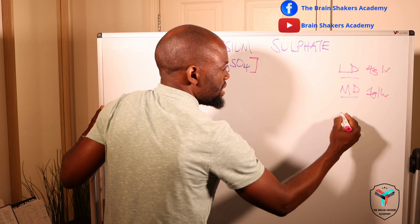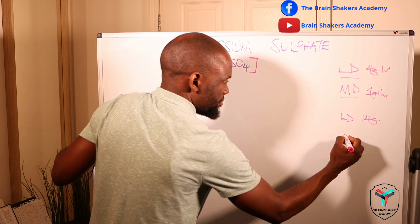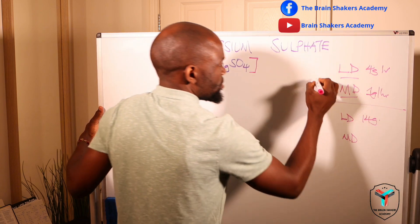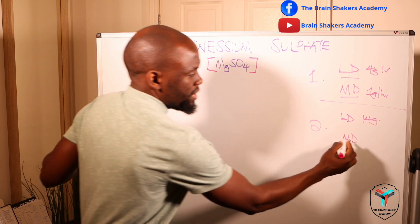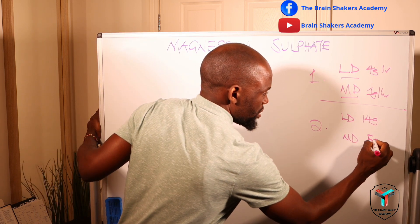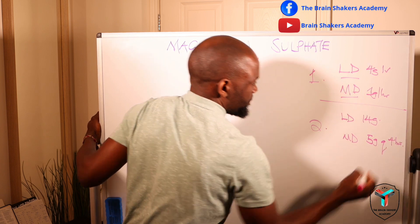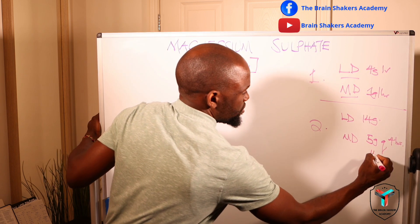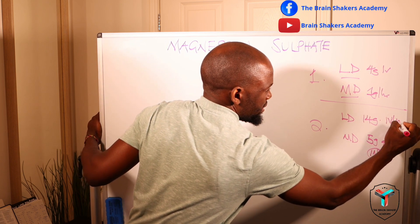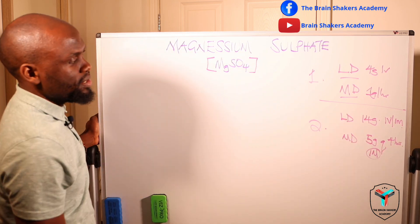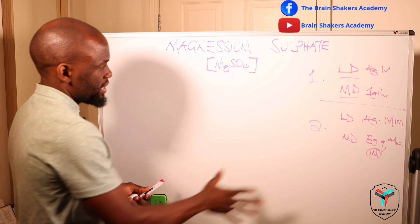In the second method, the loading dose is 14 grams of magnesium sulfate, and the maintenance dose is 5 grams every 4 hours. The loading dose in this method is administered both IV and IM, and we'll look at both methods so the administration is not confusing.